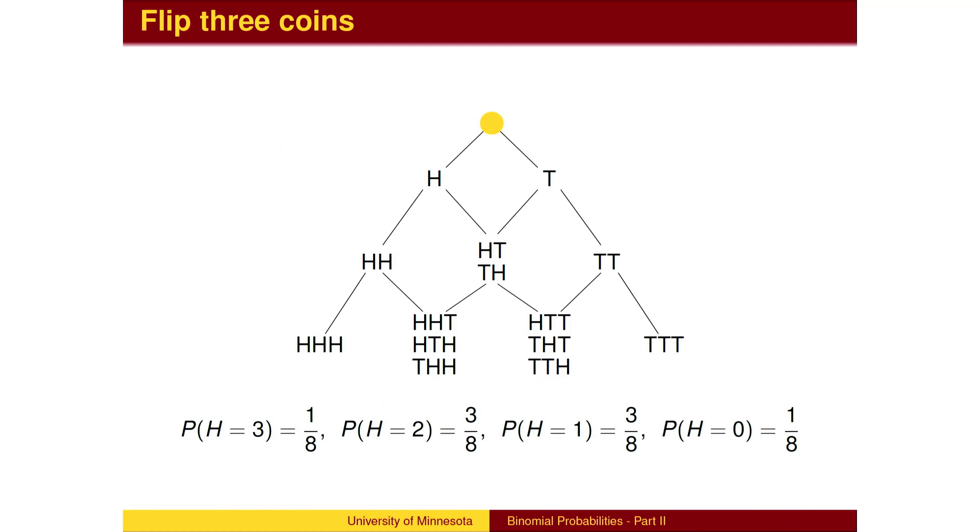Recall the binomial probability model for coin flips, where each string has equal probability. The numerators are found from Pascal's triangle. The denominator is 2 raised to the power of the number of flips.